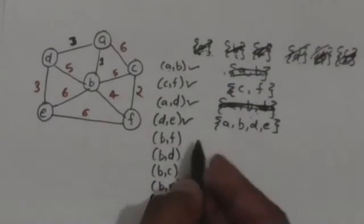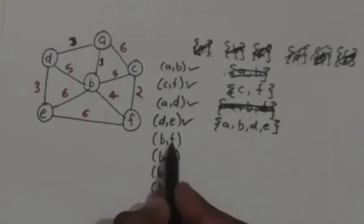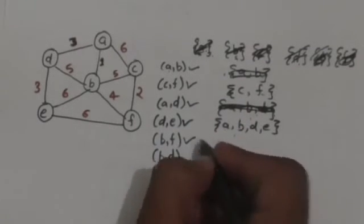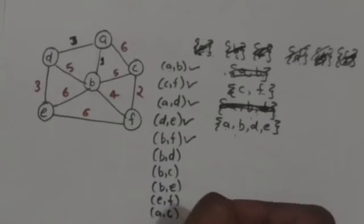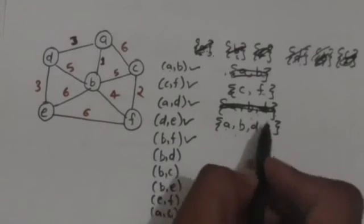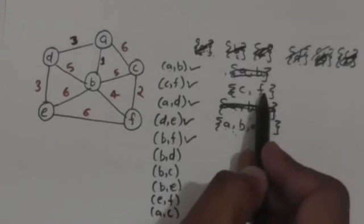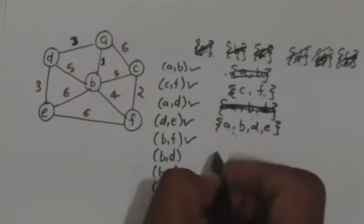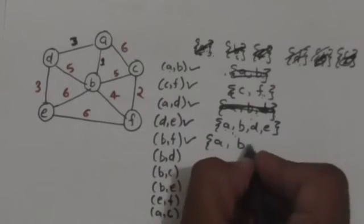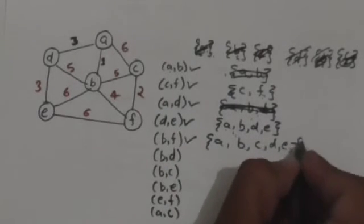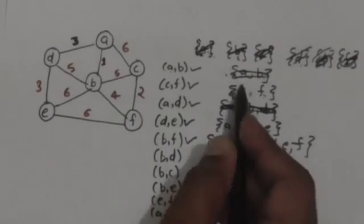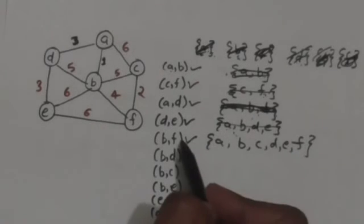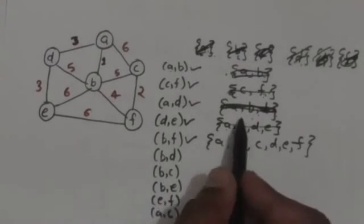The next edge is BF. Vertices B and F are in different sets, so we will select this edge to include in the minimum spanning tree. We will unite the set containing vertex B and the set containing vertex F. So this new set is the union of the set containing vertex B and the set containing vertex F.